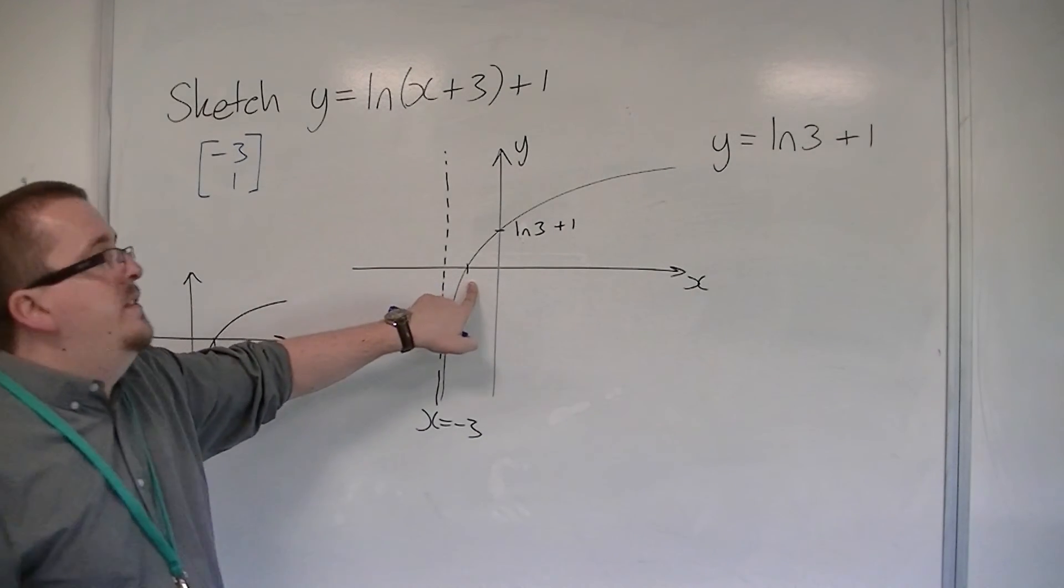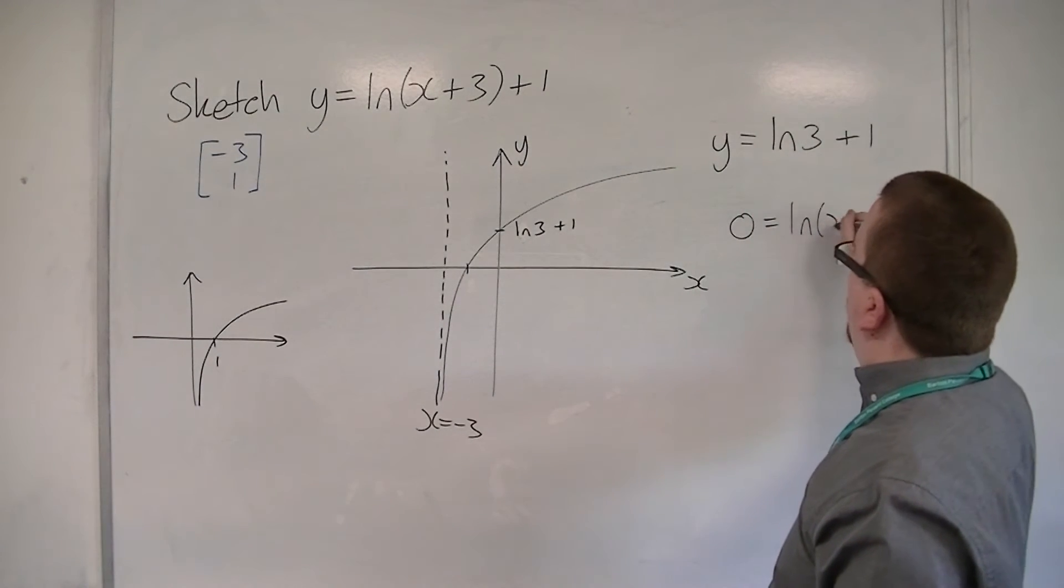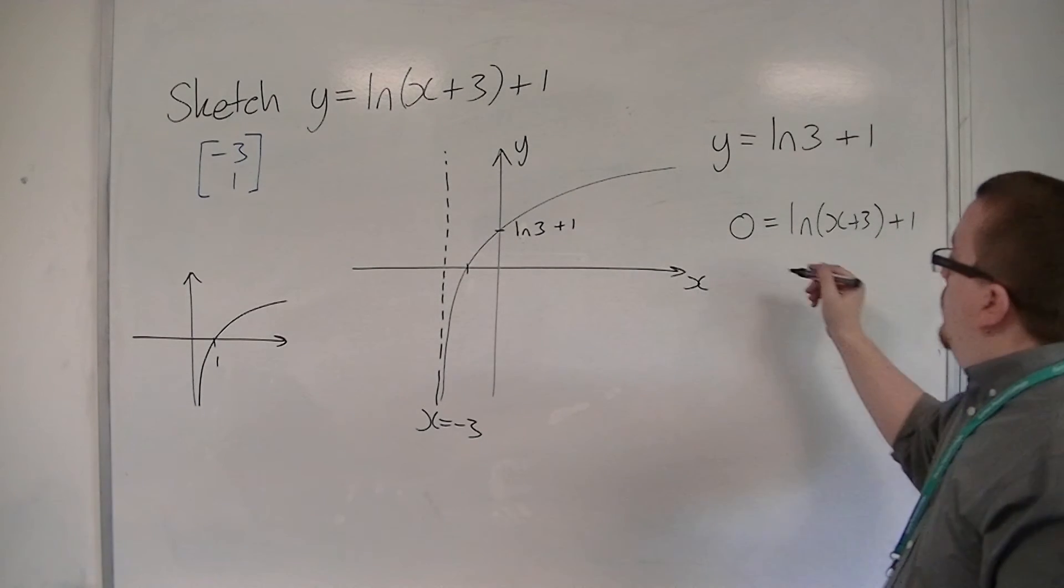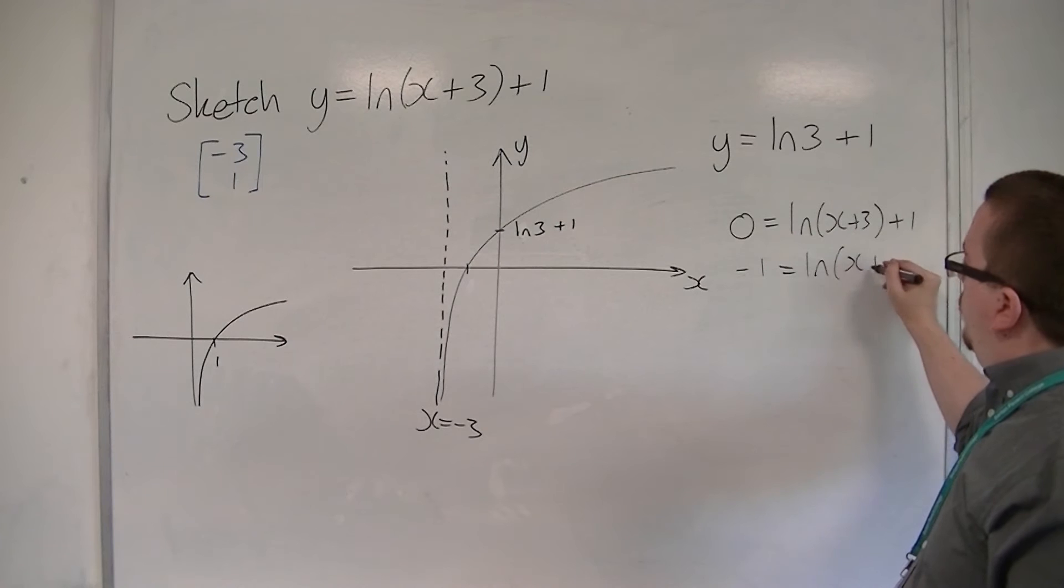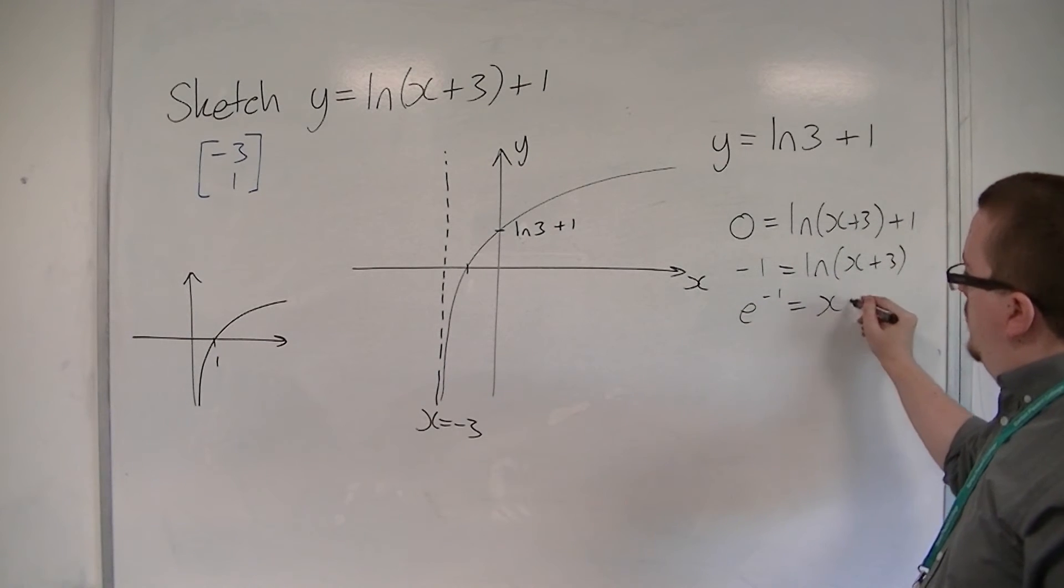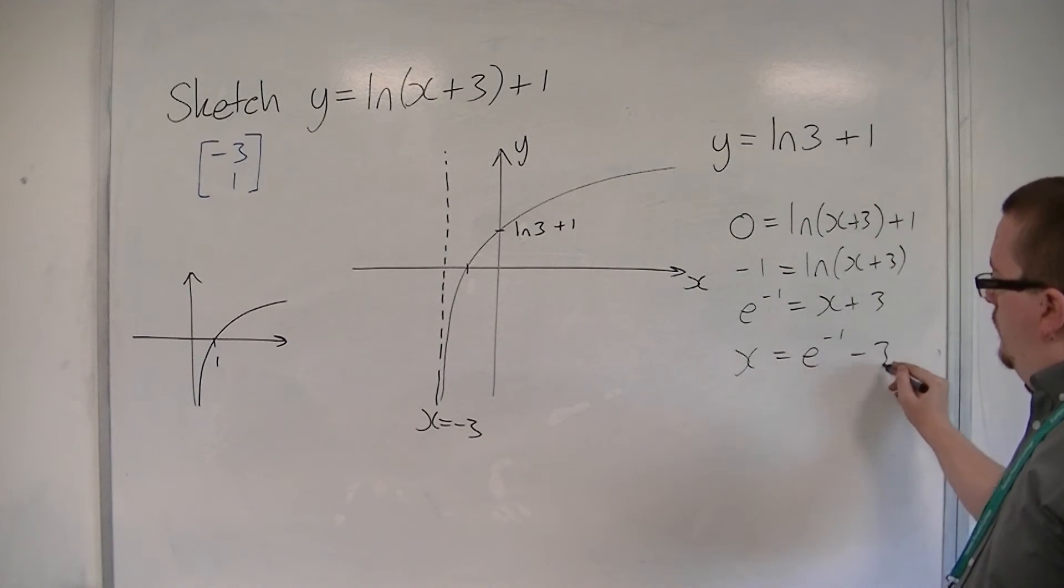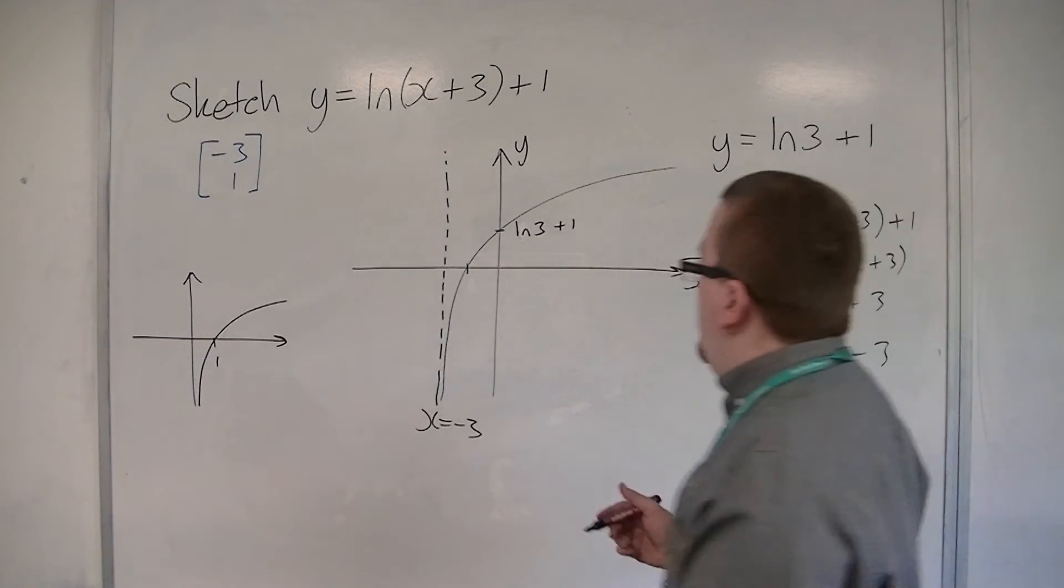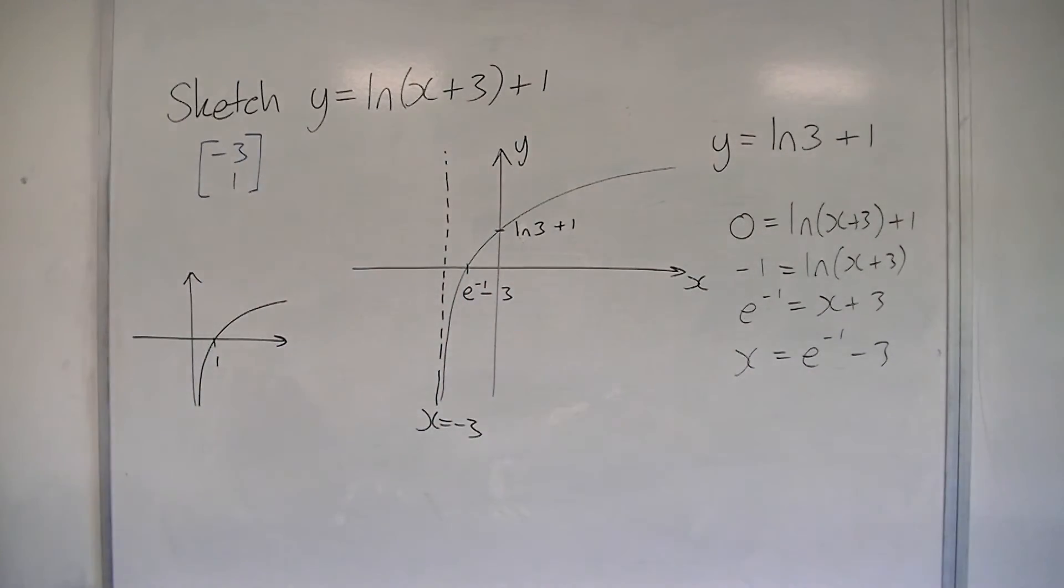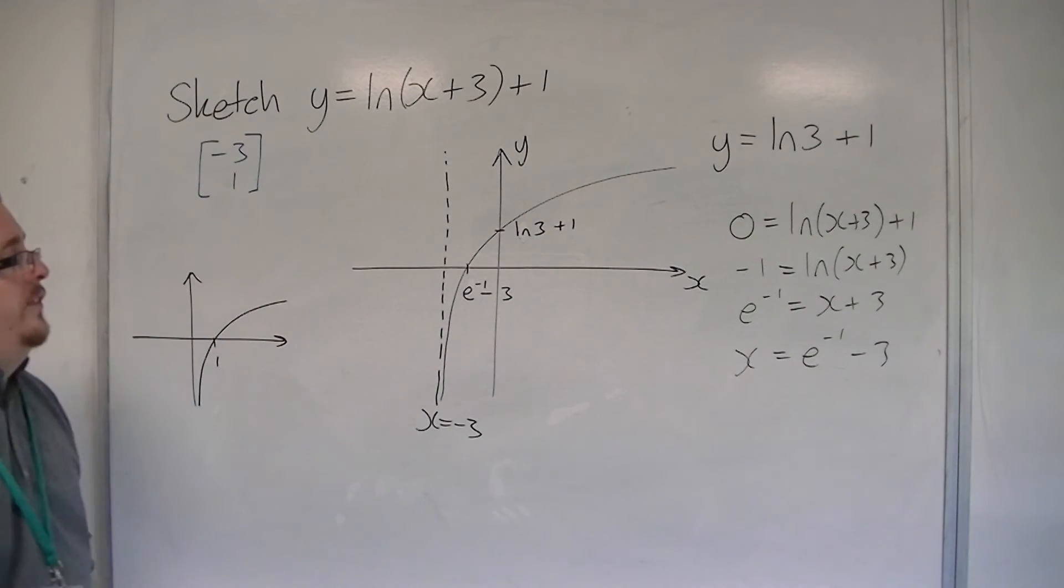And then, if you want to find out that point, that's when y is 0. So 0 is equal to log of x plus 3 plus 1. So we've got minus 1 is log of x plus 3, e both sides, and then take 3 from both sides. So that's e to the minus 1 minus 3, and then you can work those out on your calculator to get decimal equivalents, if you like.